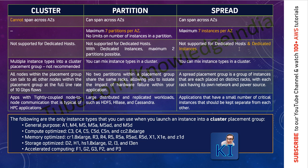The last type is spread. Spread is the type when you want to place each and every instance on a different rack. It is somewhat like partition, but a bit different because you have a limitation on the number of instances you can place in this placement group. The limitation is that you can keep maximum seven instances per availability zone. So if within a region you have two availability zones, you can maximum launch 14 instances in a spread placement group. If the region has three availability zones, then seven times three — you can launch maximum 21 EC2 instances in the spread type.